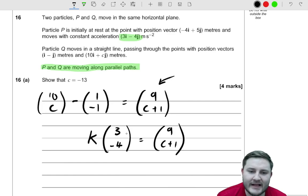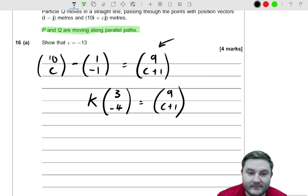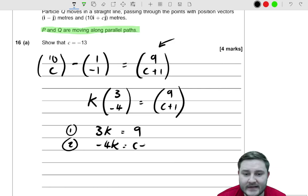Well, you can actually get two equations from this. You get the first equation that k times 3, or 3k, is equal to 9. So that's the first equation you can get from this. And the second equation that you can get is that -4k is equal to c + 1.